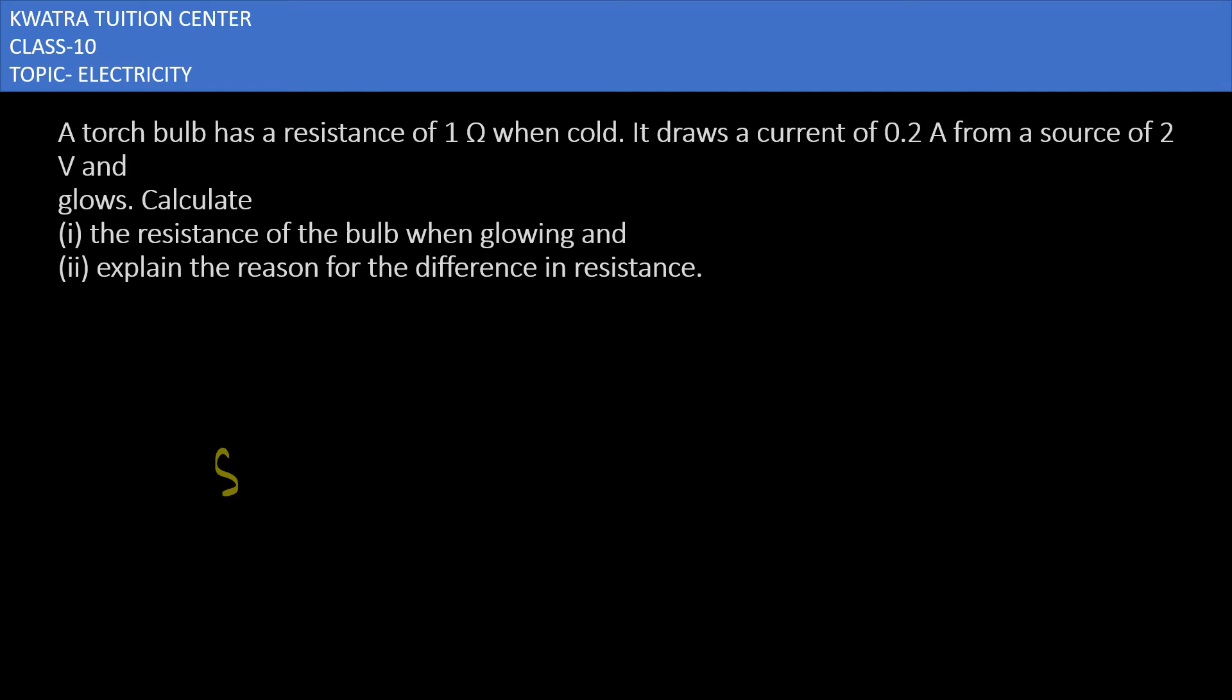Let's start with the second question. A torch bulb has a resistance of 1 ohm when cold. It draws a current of 0.2 ampere from a source of 2 volts and glows. Calculate the resistance of the bulb when glowing.